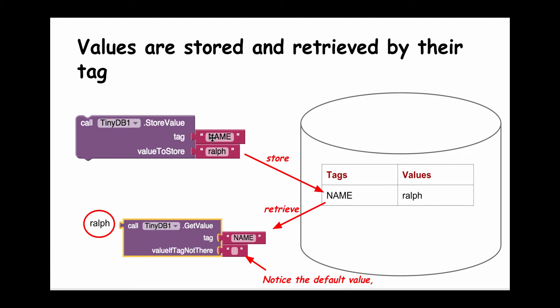I need to give it a tag. The tag in this case is the word NAME, the string name in uppercase. When this block fires, it will store the tag and its associated value in the database. You can think of the database as really a table with two columns.